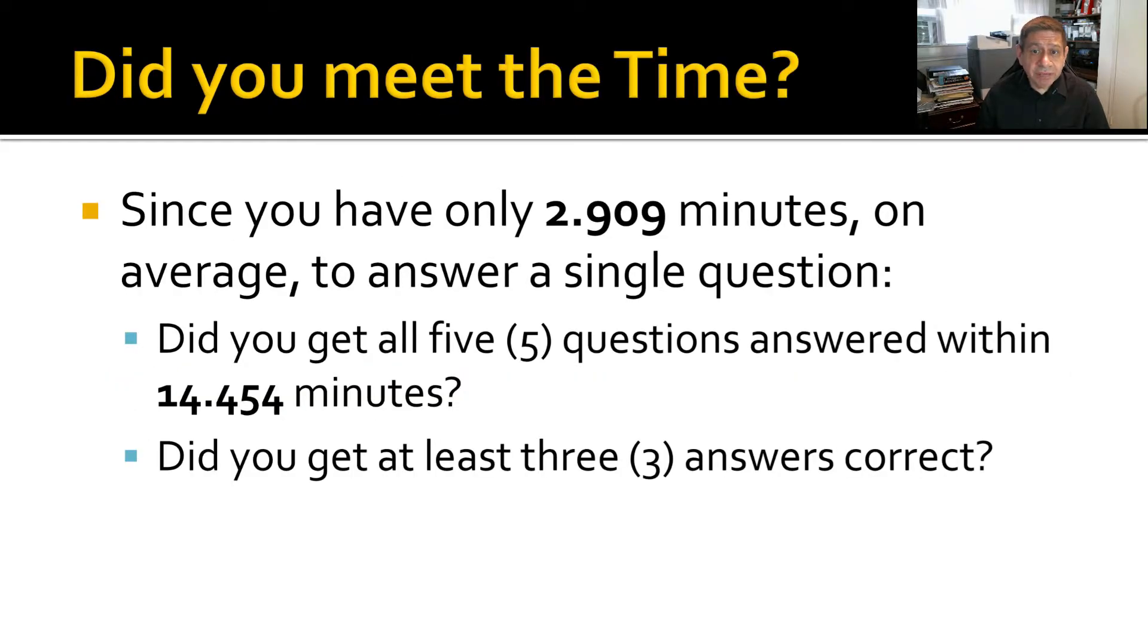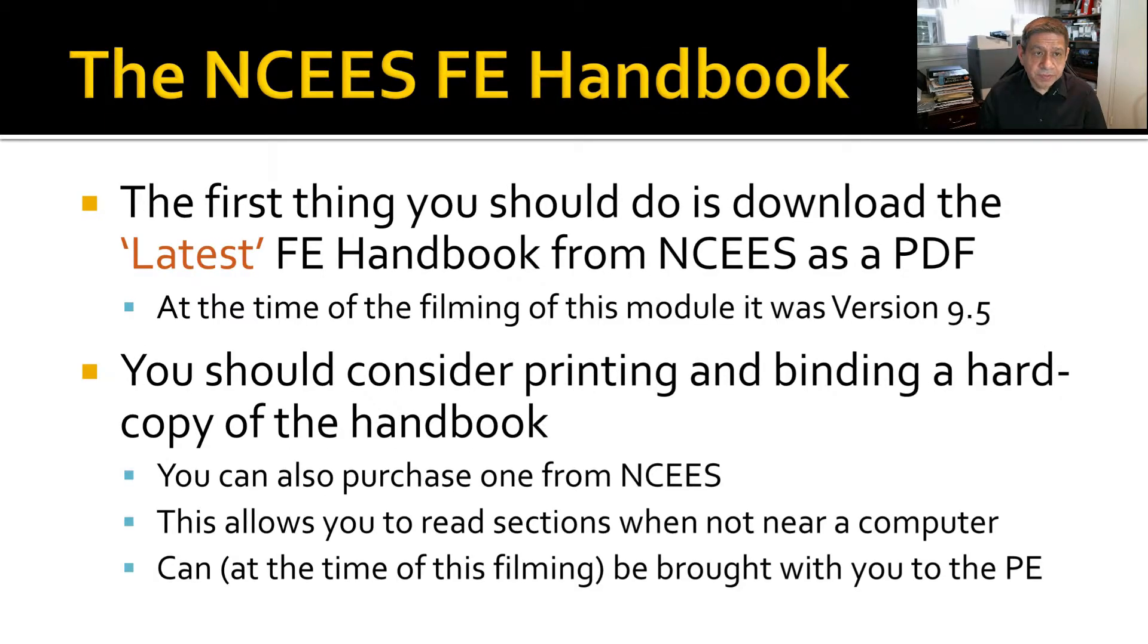Did you meet the time? Again, five questions and you had an average of 2.909 minutes per each. Did you get all five questions answered within the 14 minutes and a half? Did you get at least three answers correct? Again, as I said in the previous reviews, three is 60% and that's generally considered the passing score for the FE exam. Now, let's start today's topic.